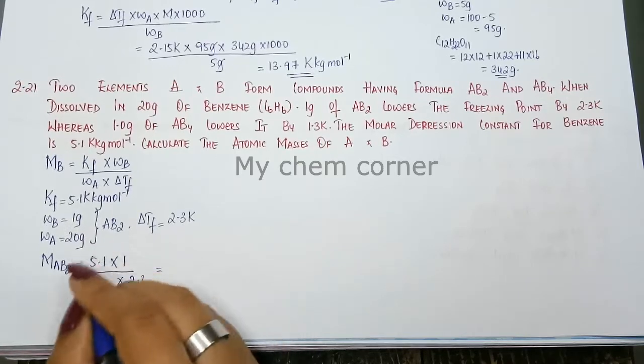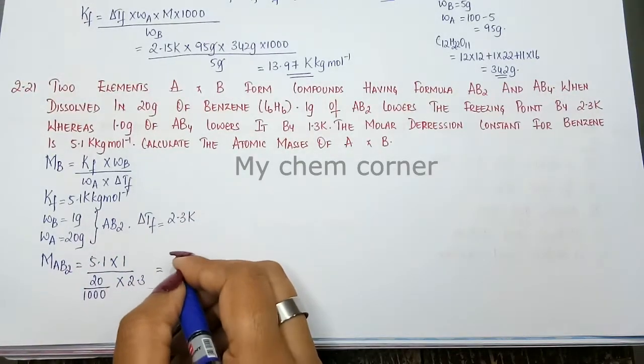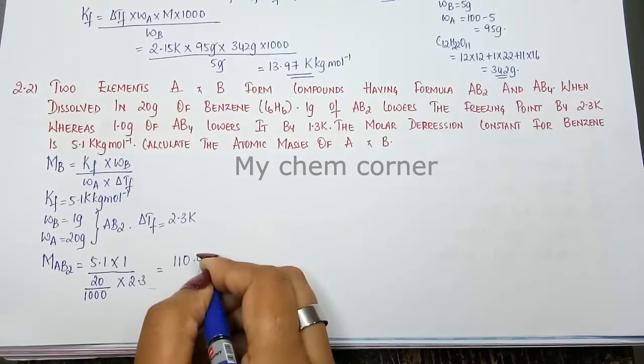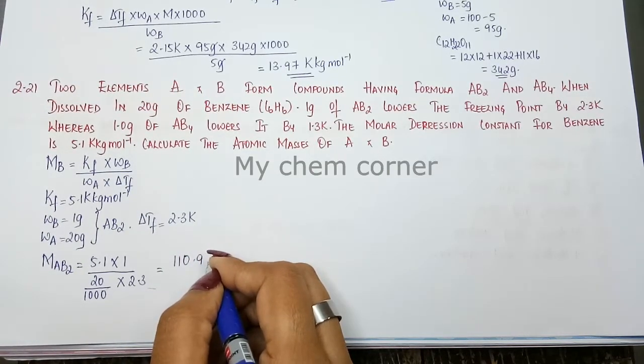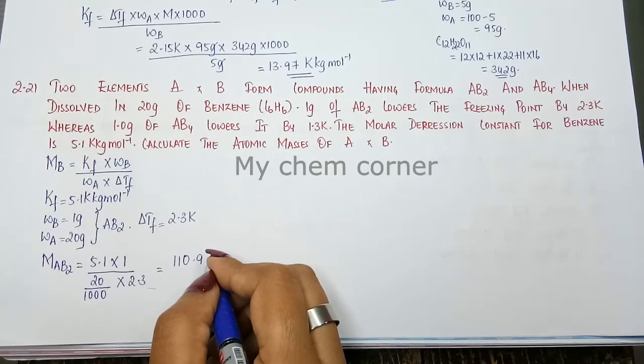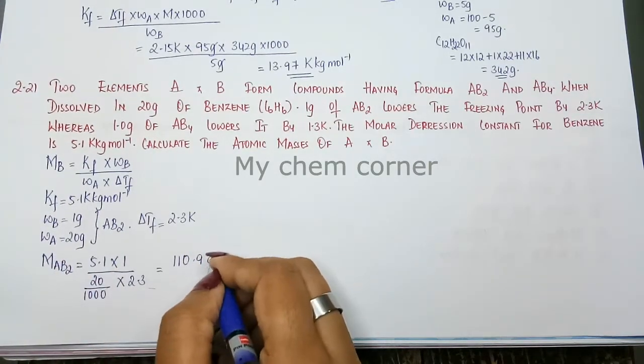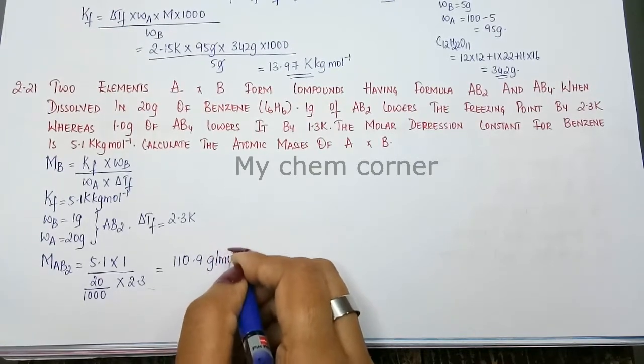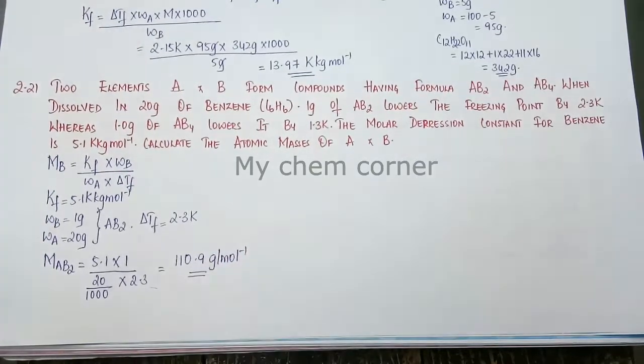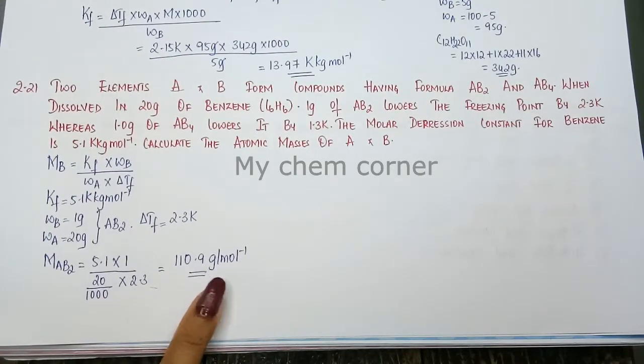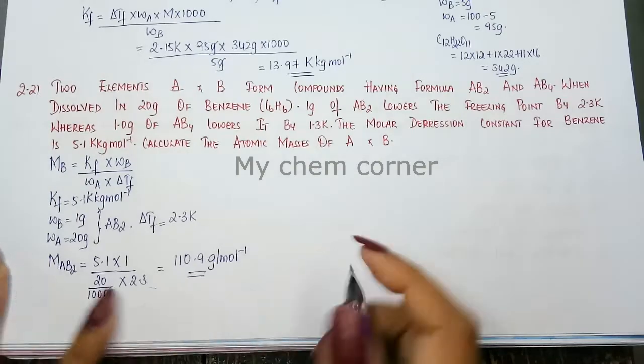Now when you simplify this entire thing you will get your answer as 110.9. This is going to be in terms of kg, so here you will have this as gram per mole. So you will get your answer here in terms of gram per mole that is going to be for AB2.